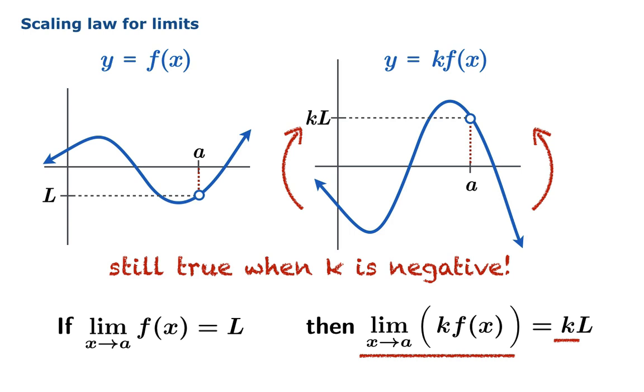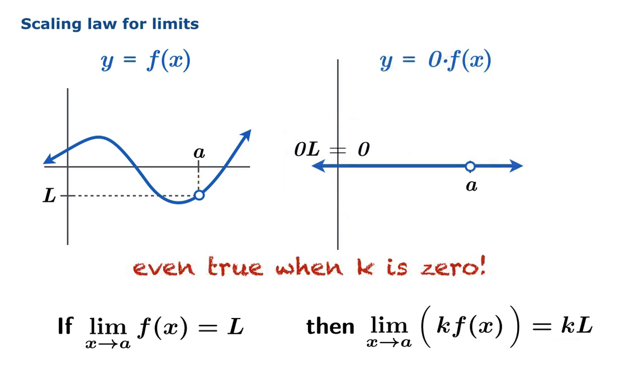So the bottom line here is you don't have to do anything funny when k is negative. This one rule applies whether k is positive or negative. In fact, it's even true when k is zero, and the easiest way to imagine this is zero times f of x is the constant function zero, so the limit's definitely zero, and of course zero times the limit is also zero. Both sides of this equation are zero, so it's true in the simplest sort of way.